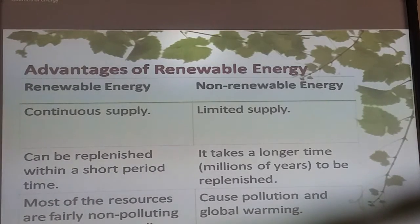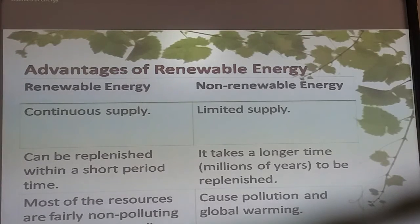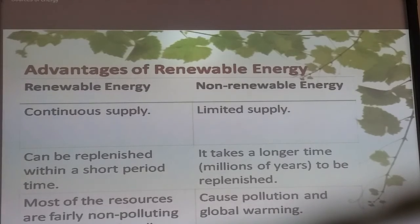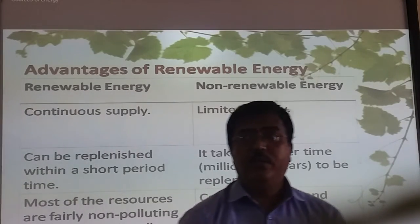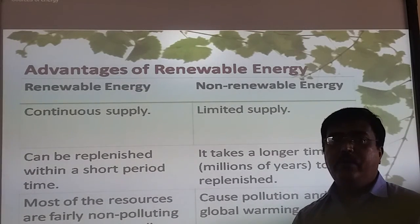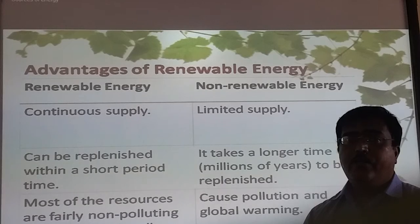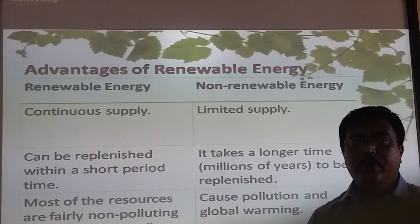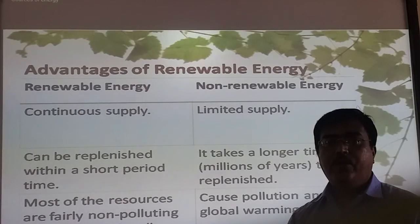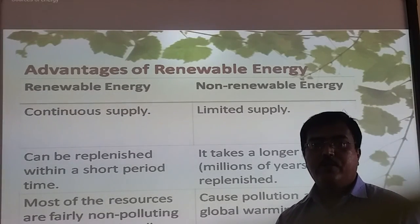In conclusion, renewable energy means a continuous supply that can be recreated in a short period of time. Most sources are fairly non-polluting and easily available. Non-renewable energy has a limited supply, takes a longer time to form, causes pollution, and contributes to global warming. This is the difference between renewable and non-renewable sources of energy. Today we discussed some of the non-renewable sources of energy and their importance. Thank you.